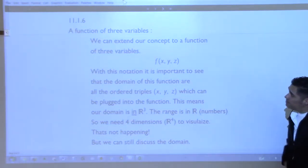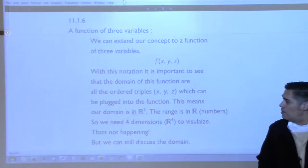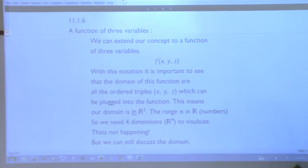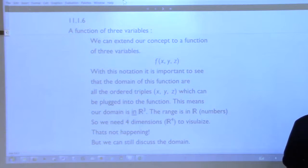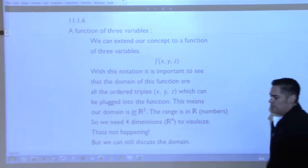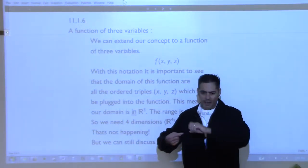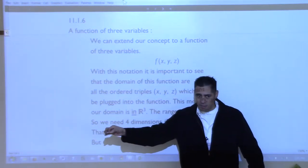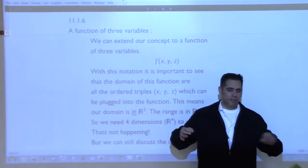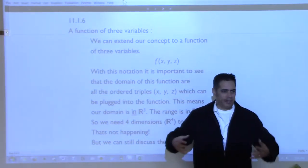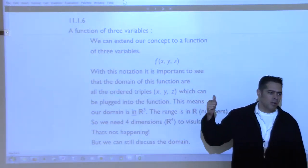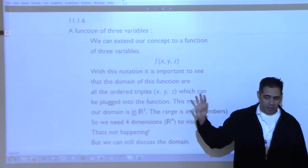We are going to finish up 11.1 and start 11.2 today. In chapter 11 we started with the concept of a function of two variables — instead of taking a number and plugging it into a function to get a number out, we can plug in an ordered pair and have a number come out. We need three dimensions to visualize it, and that gives us a surface. We were looking at functions of two variables, their domains, and what they look like visually.